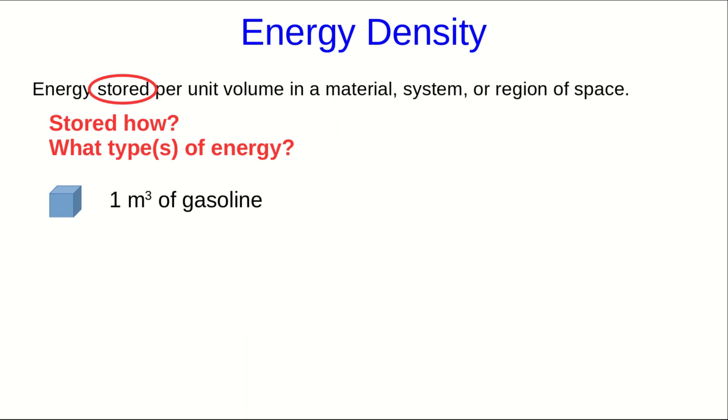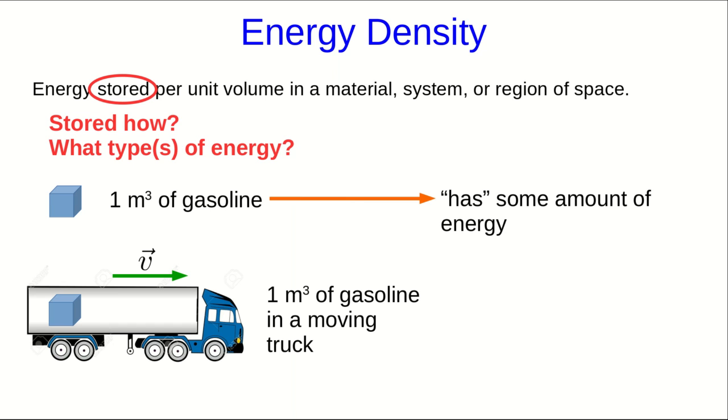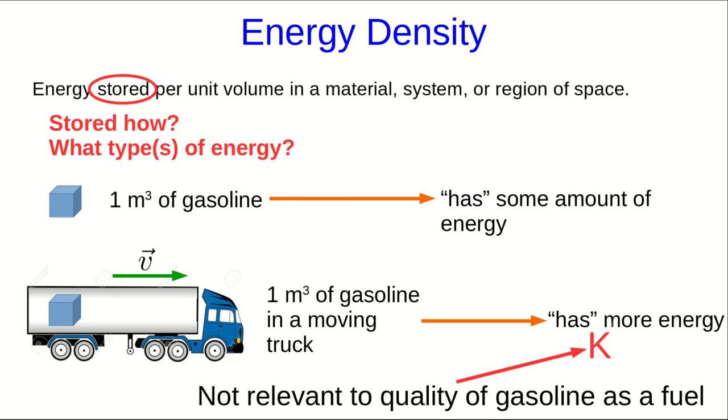For example, let's think about a cubic meter of gasoline. That cubic meter of gasoline certainly has some amount of energy. But suppose we take that cubic meter of gasoline and put it in a truck that is moving down the highway at some high speed. Well, now it definitely has more energy because it has kinetic energy. But that's probably not relevant. If we're talking about the energy density of gasoline, what we're probably thinking about is its value as a fuel, and the kinetic energy it has is totally irrelevant to that.